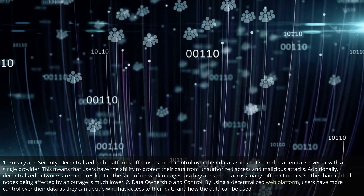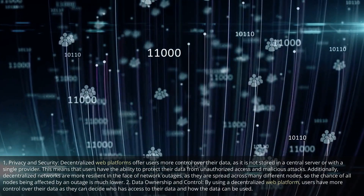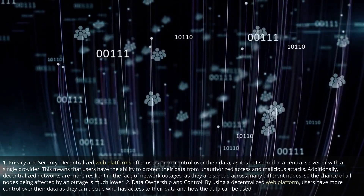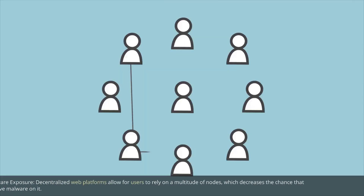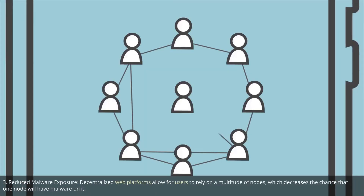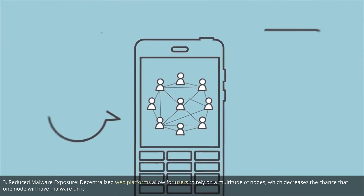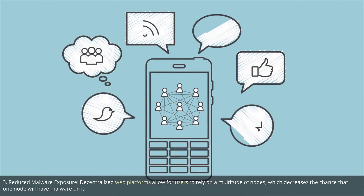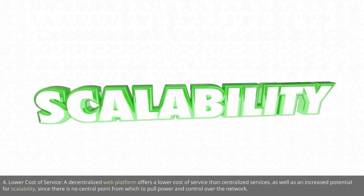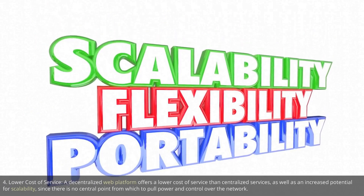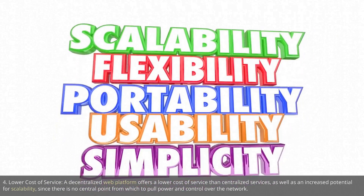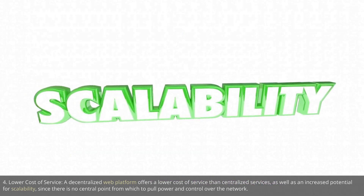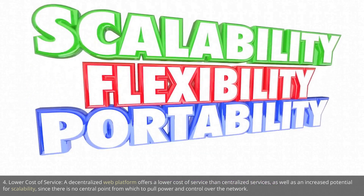Second, data ownership and control. By using a decentralized web platform, users have more control over their data as they can decide who has access to their data and how the data can be used. Third, reduced malware exposure. Decentralized web platforms allow for users to rely on a multitude of nodes, which decreases the chance that one node will have malware on it. Fourth, lower cost of service. A decentralized web platform offers a lower cost of service than centralized services, as well as an increased potential for scalability, since there is no central point from which to pull power and control over the network.